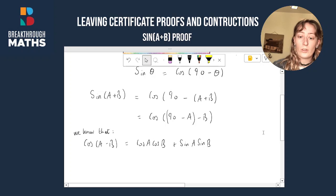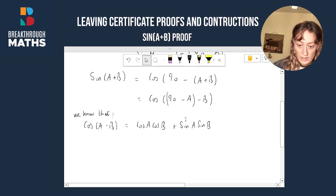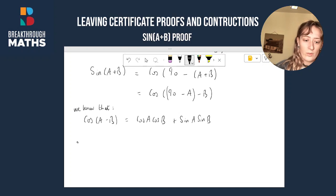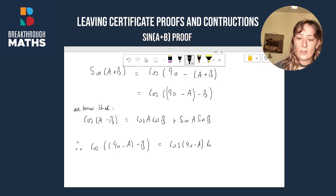Now, using this formula, we're going to sub in for a 90 minus a and b you can just say is b. So let's do that. So therefore, cos of 90 minus a minus b is equal to cos of 90 minus a cos b plus sine of 90 minus a sine b.